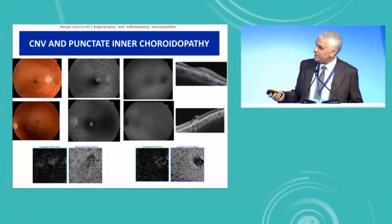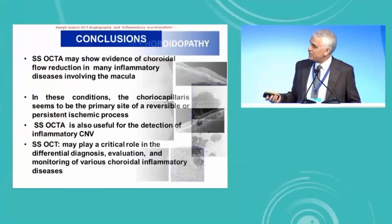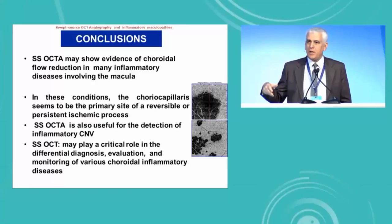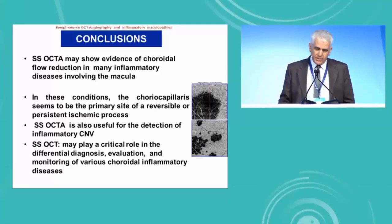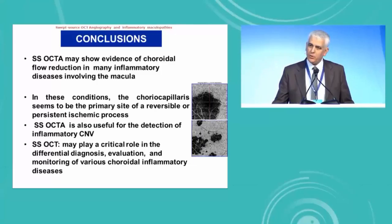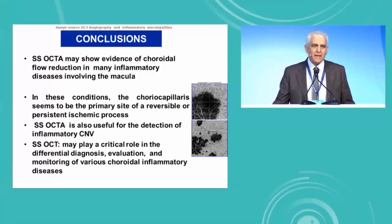OCT angiography is very important in the diagnosis and in following patients and monitoring response to treatment. In conclusion, swept-source OCT angiography may show evidence of choroidal flow reduction in many inflammatory diseases — what we call white dot syndromes and other entities. In these conditions, the choriocapillaries seems to be the primary site of a reversible or persistent ischemic process. Swept-source OCT angiography is also useful for the detection and follow-up of inflammatory CNV, and will play an important role in the differential diagnosis, evaluation, and monitoring of various choroidal inflammatory conditions. Thank you for your kind attention.